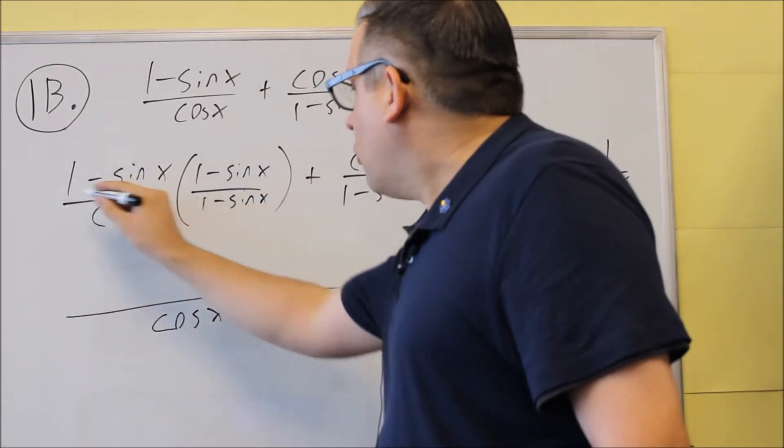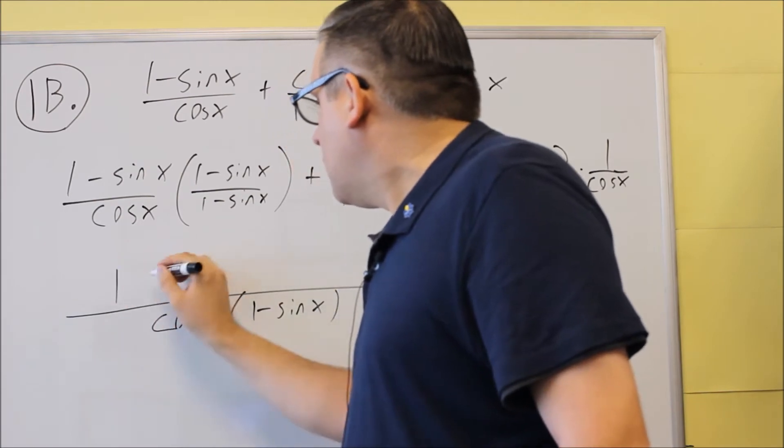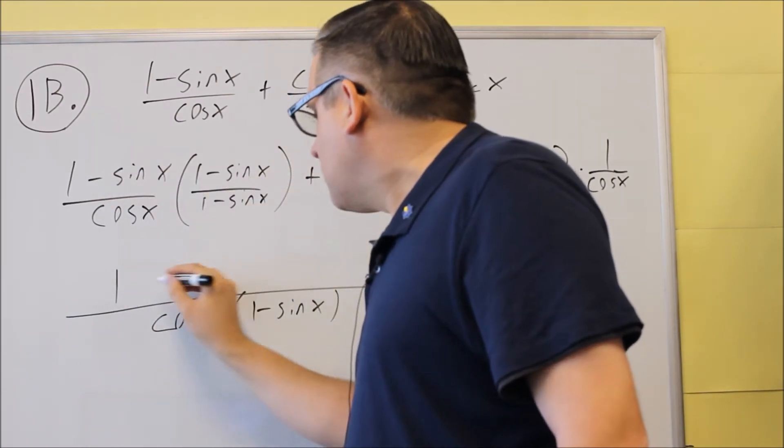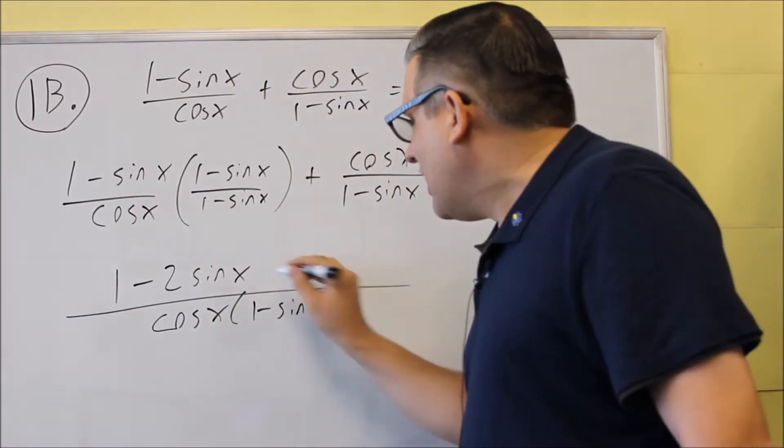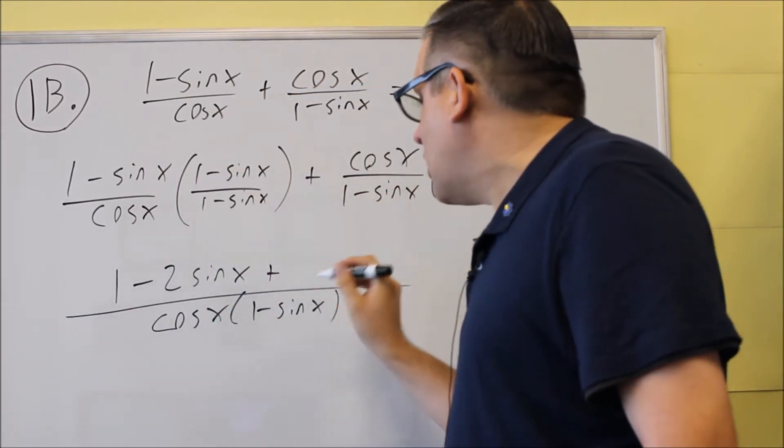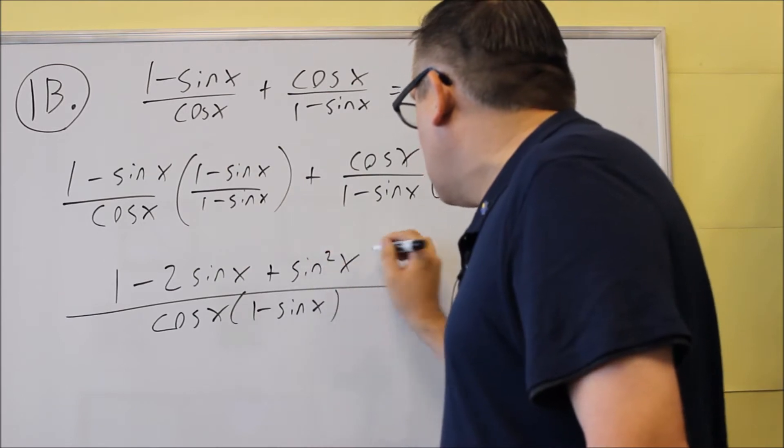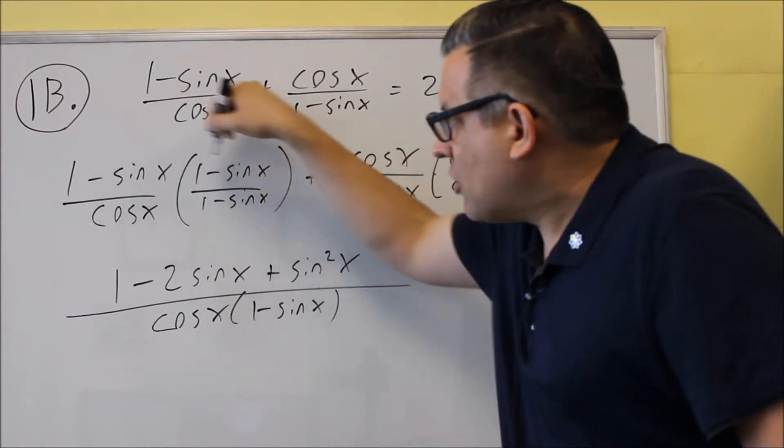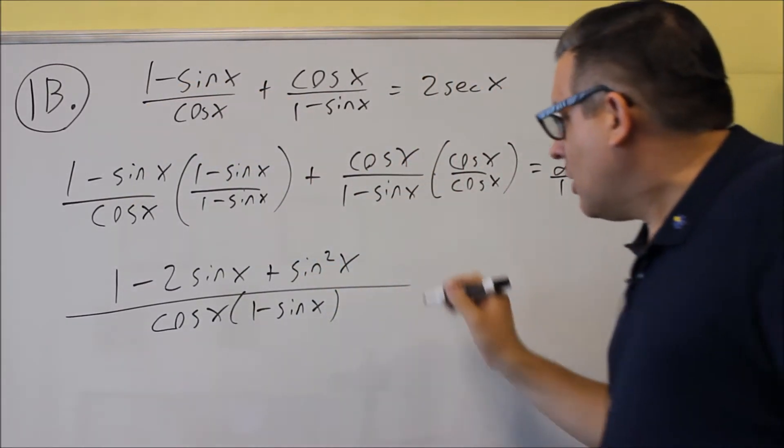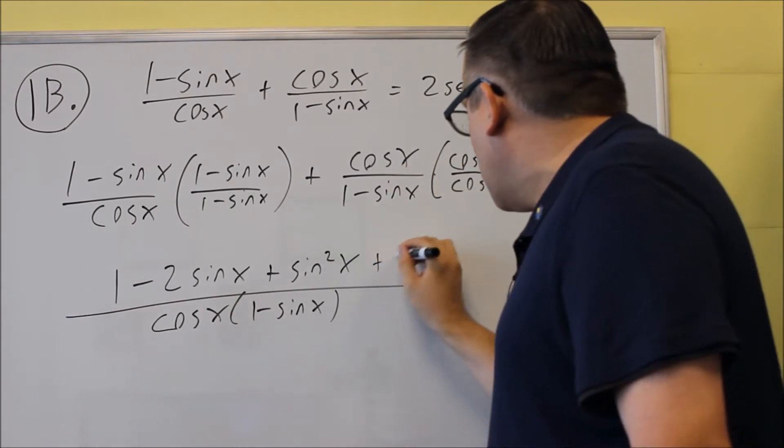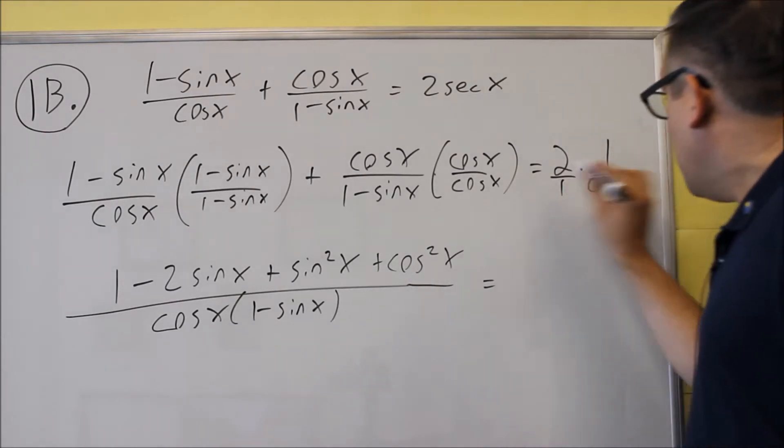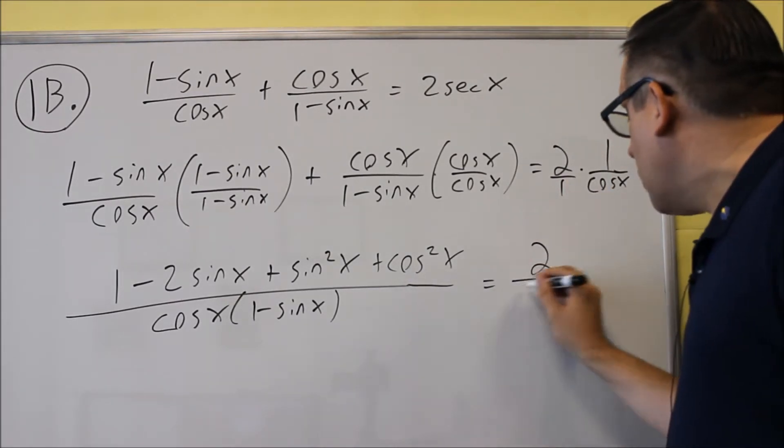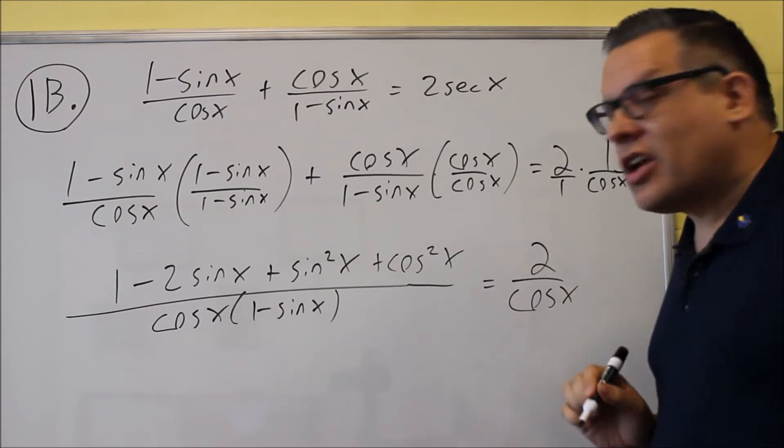This one, we're going to do 1 times 1 is 1, and we have a minus sine x, and another minus sine x. We're going to get a minus 2 sine x, and then plus sine x and sine x will be sine squared. It'll be a plus because you've got two negatives multiplied together. Now, on the end, we've got cosine and cosine, and we have cosine squared. When you multiply this across the top, across the bottom, you'll get 2 over cosine x.